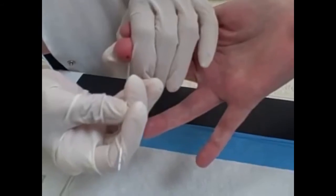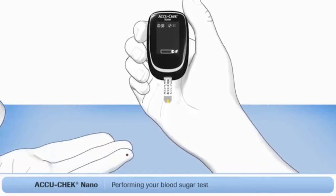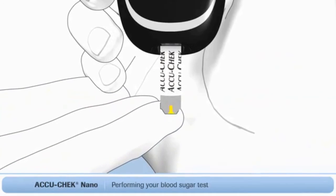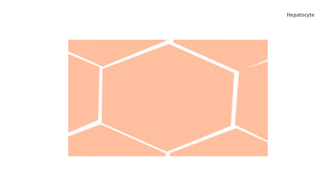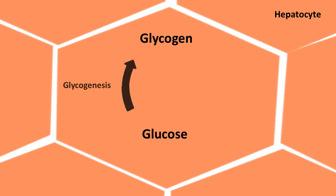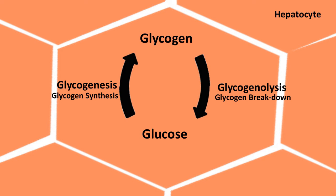Blood glucose is a source of energy for the entire human body. An upsurge in blood glucose triggers glycogen synthesis, which sweeps away extra-high glucose from blood by consuming it to synthesize glycogen — a process called Glycogenesis. On the other hand, a decline in blood glucose concentration is countered by glucose influx through breakdown of glycogen, and that process is called Glycogenolysis.